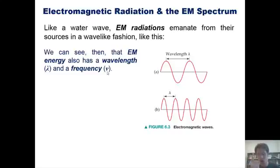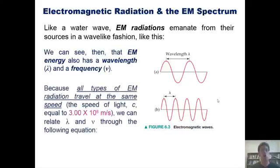So, the larger the wavelength, the smaller the frequency, and vice versa. And now to blow your minds. See, it turns out all types of EM radiation travel at the same speed, which is the speed of light that happens to be 3 times 10 to the 8th meters per second. Which is kind of fast. Because of that, we can relate wavelength and frequency using this equation from our text.